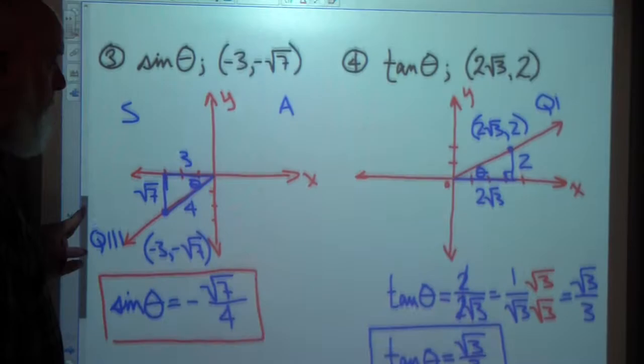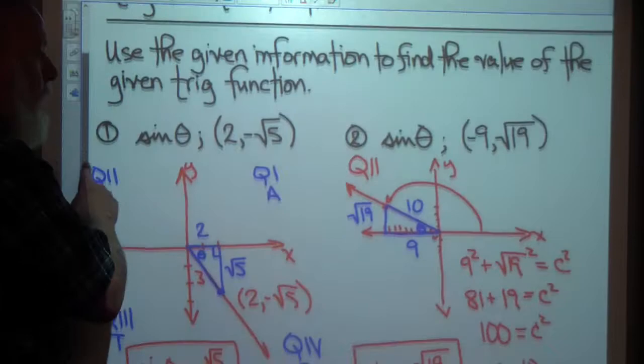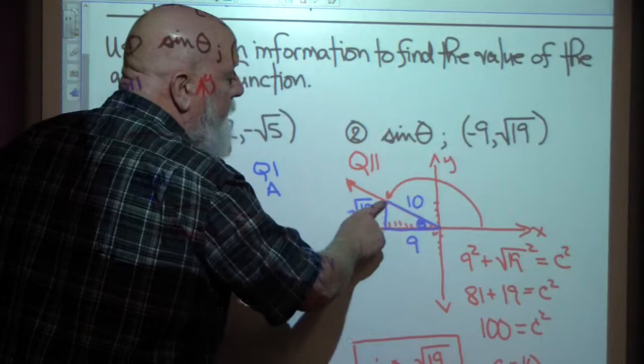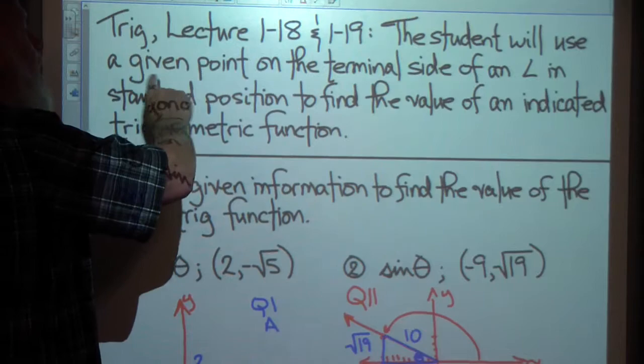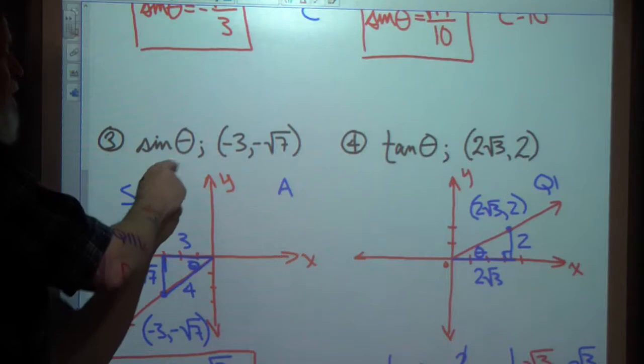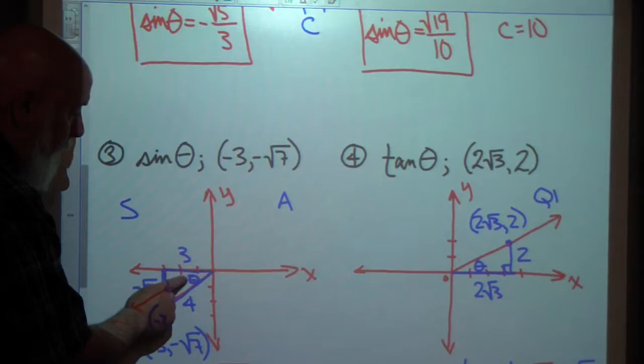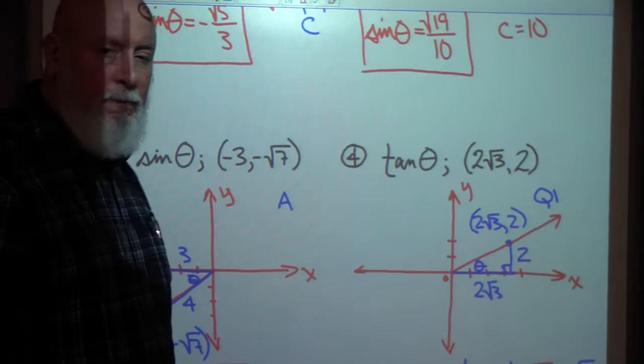Hopefully that makes sense. We're using a given point on the terminal side of an angle — they give us the point, I draw the angle and locate the point to identify the quadrant. It doesn't have to be perfect, just gives me an idea of what quadrant I'm in. The cosine is adjacent over hypotenuse, tangent is opposite over adjacent — always from the perspective of the reference angle. The reference angle goes from the terminal side to the closest x-axis. You can do this.